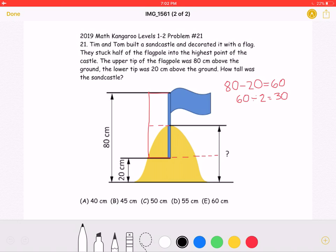Let's start by finding the length from here to here, shown in green, of the flagpole. Well, we know that from here to here is 80 cm, and from here to here is 20 cm.